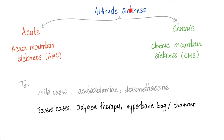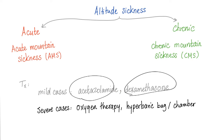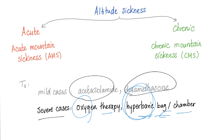Treatment of altitude sickness: if it's mild, acetazolamide — which is today's topic — as well as dexamethasone. Severe cases, you're going to need some oxygen — oxygen mask, or if it's really severe, a hyperbaric bag or even a hyperbaric chamber.